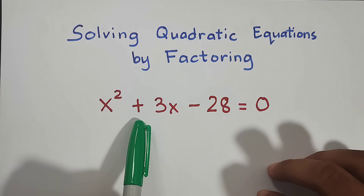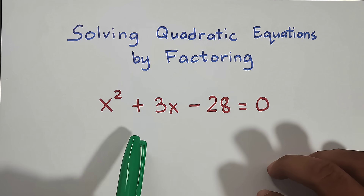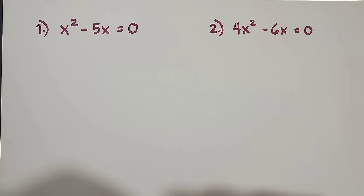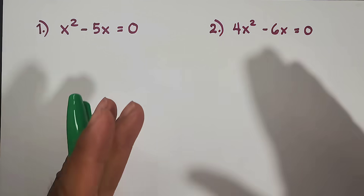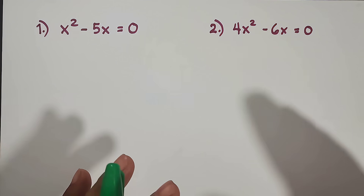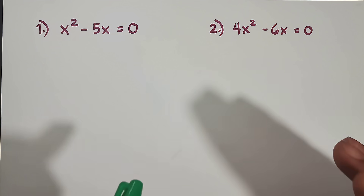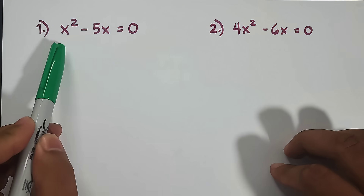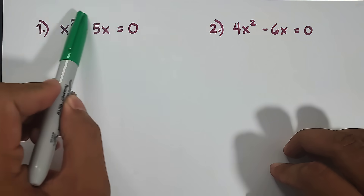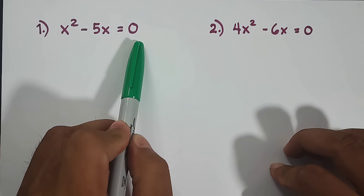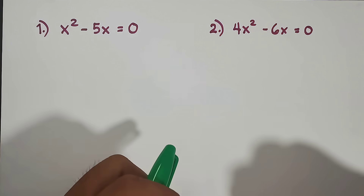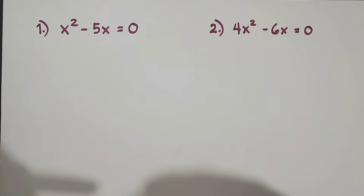Before we start answering this equation or finding the solution, let's try first these first two examples. When we are doing solving quadratic equations, what we need to do — what is the purpose — is that we are trying to find the values of x, or what are the possible values of x to make this whole equation equal to 0. And one of the ways to solve a quadratic equation is by factoring.